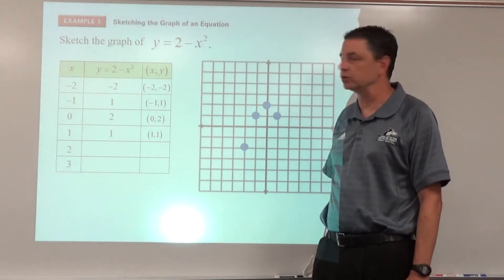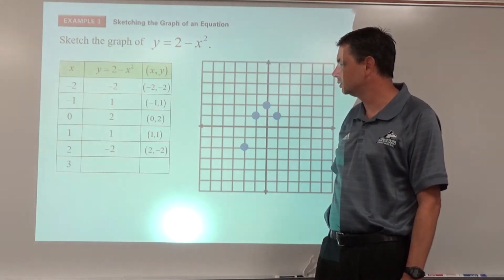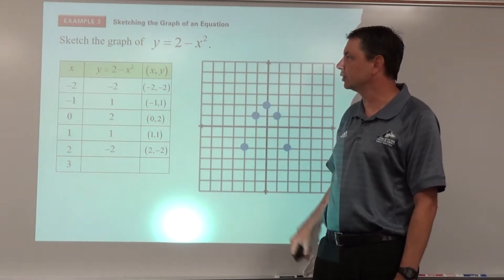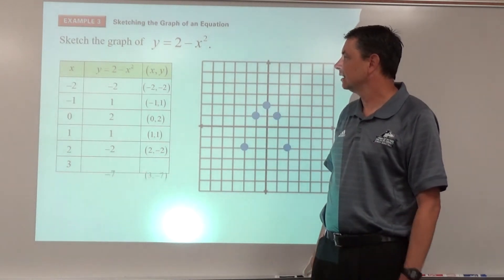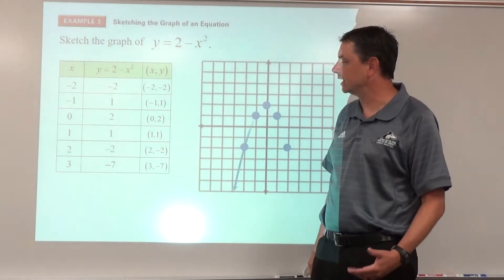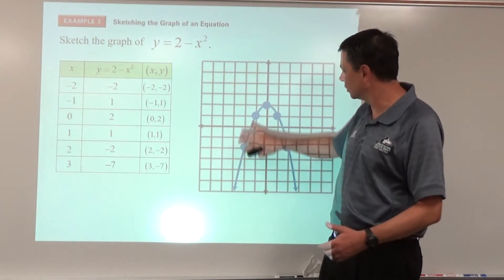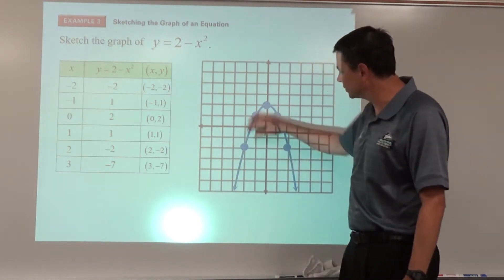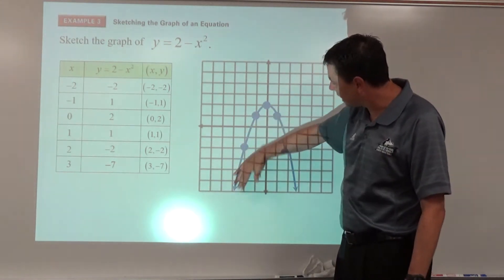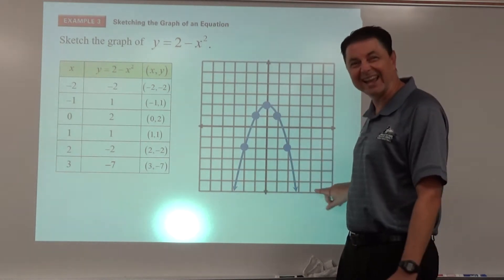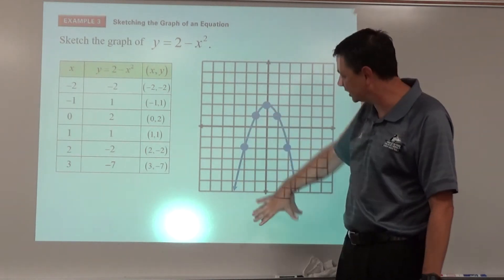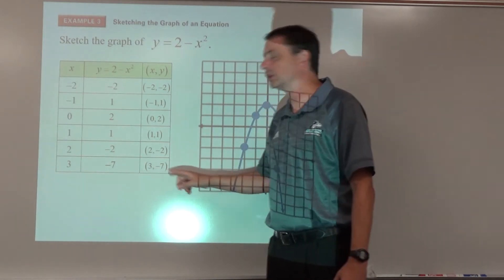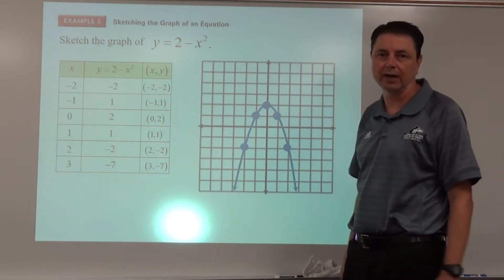For x = 2: 2 - 4 = -2, giving the point (2, -2). If we tried x = 3: 2 - 9 = -7, which doesn't fit on the graph. From these points we can see it is a parabola shape. We put arrows on the graph to show it continues left and right, passing through (3, -7) even though that doesn't appear on the graph.